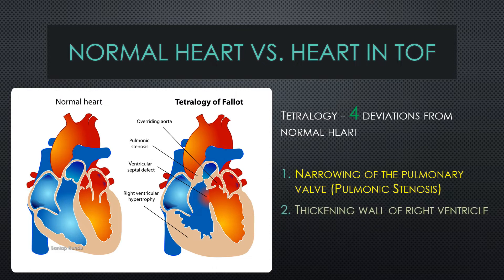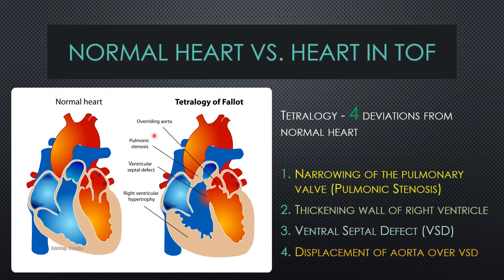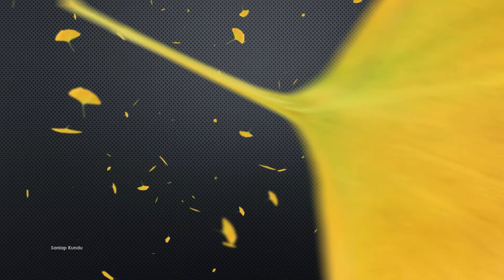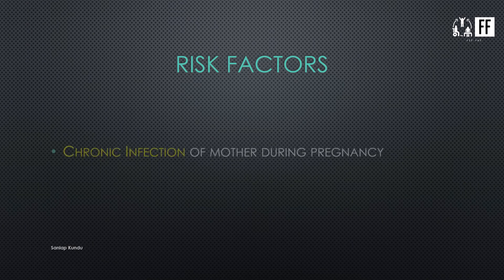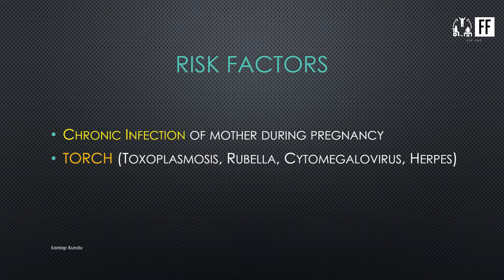The second deviation is thickening of the wall of the right ventricle, also called right ventricular hypertrophy. Third is VSD or ventricular septal defect, meaning the septum is not formed properly and there is mixing of blood. The final deviation is displacement of the aorta over the VSD, also known as overriding aorta.